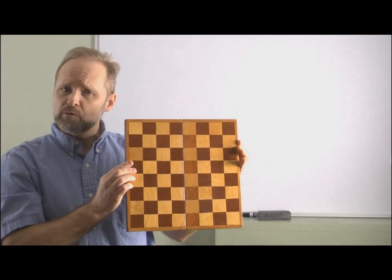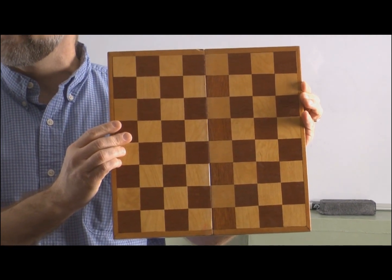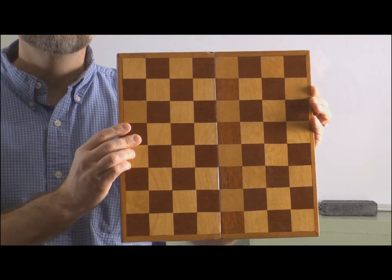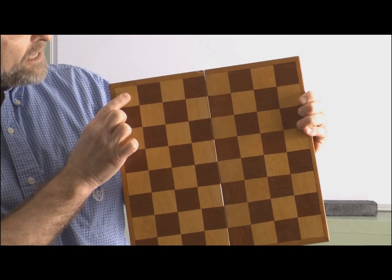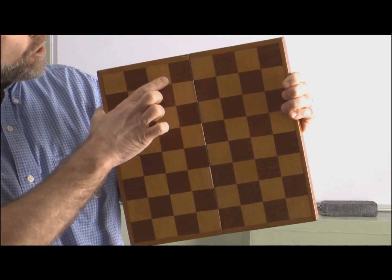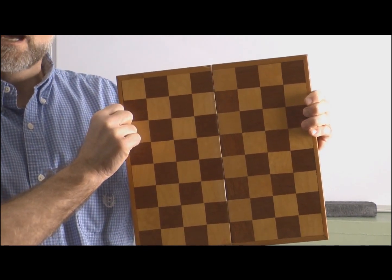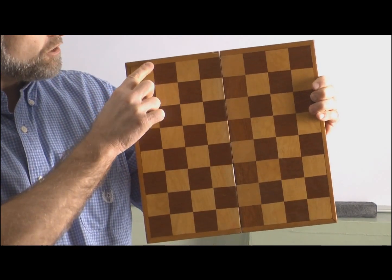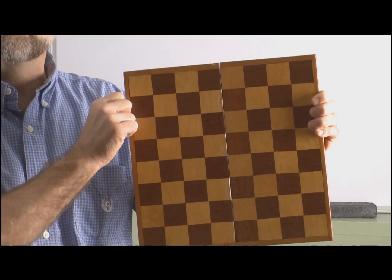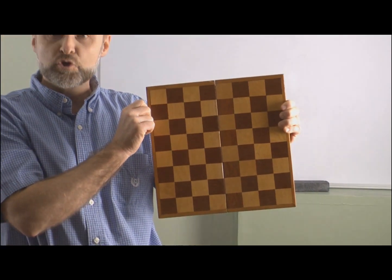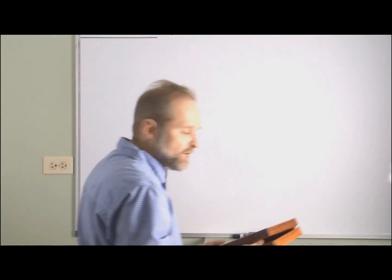Some of you probably recognize this as being a chessboard, but other students probably recognize this as being a checkers board. Well, the good news is both of you are correct. As we take a close look at the board, what we see is alternating light squares and dark squares as we work our way across. The question is: how many squares do we have on a chessboard that are just this size? Multiplication gives us a quick method for figuring out how many squares we actually have, and this will be a problem that we will take a look at in a later lesson.